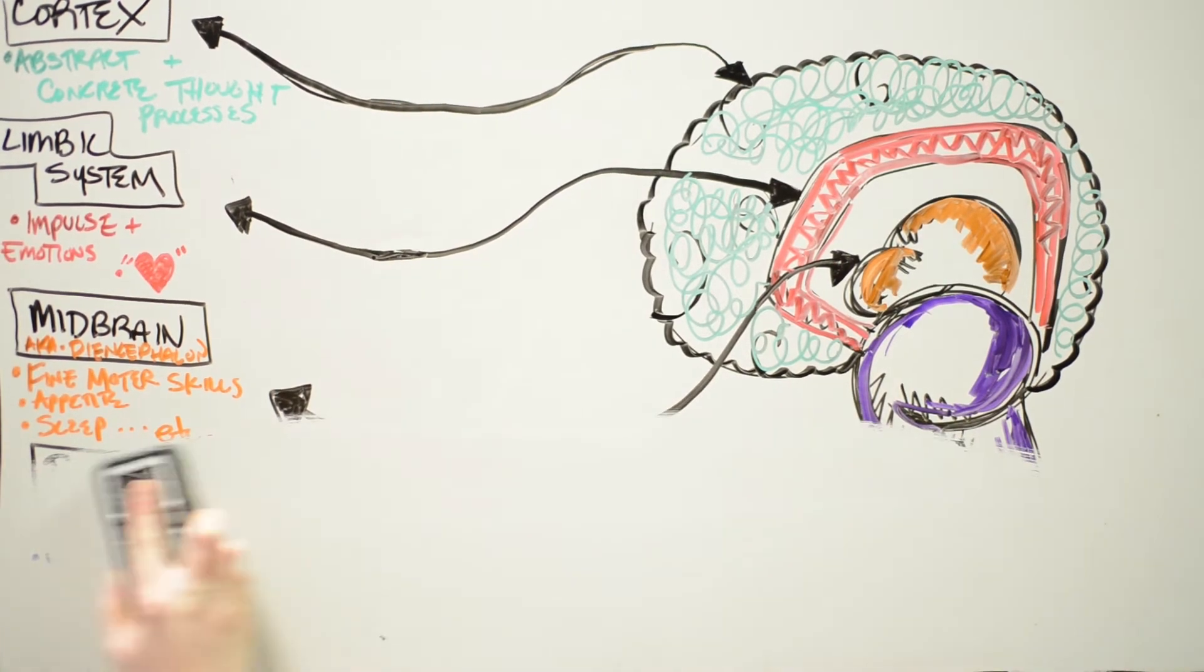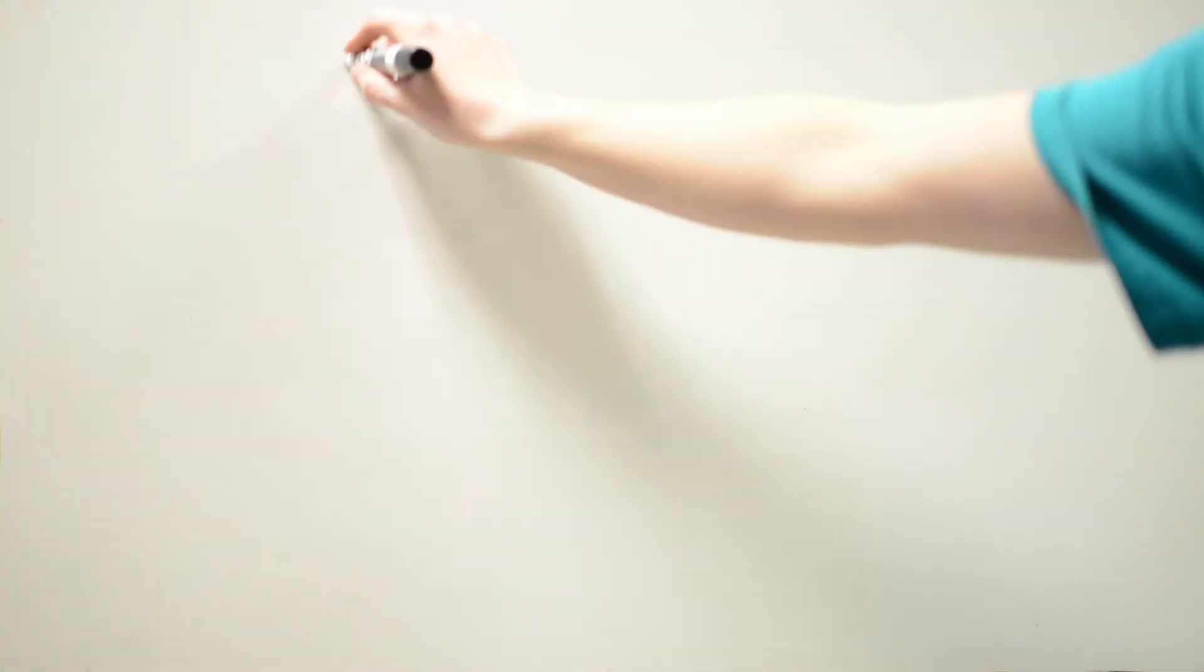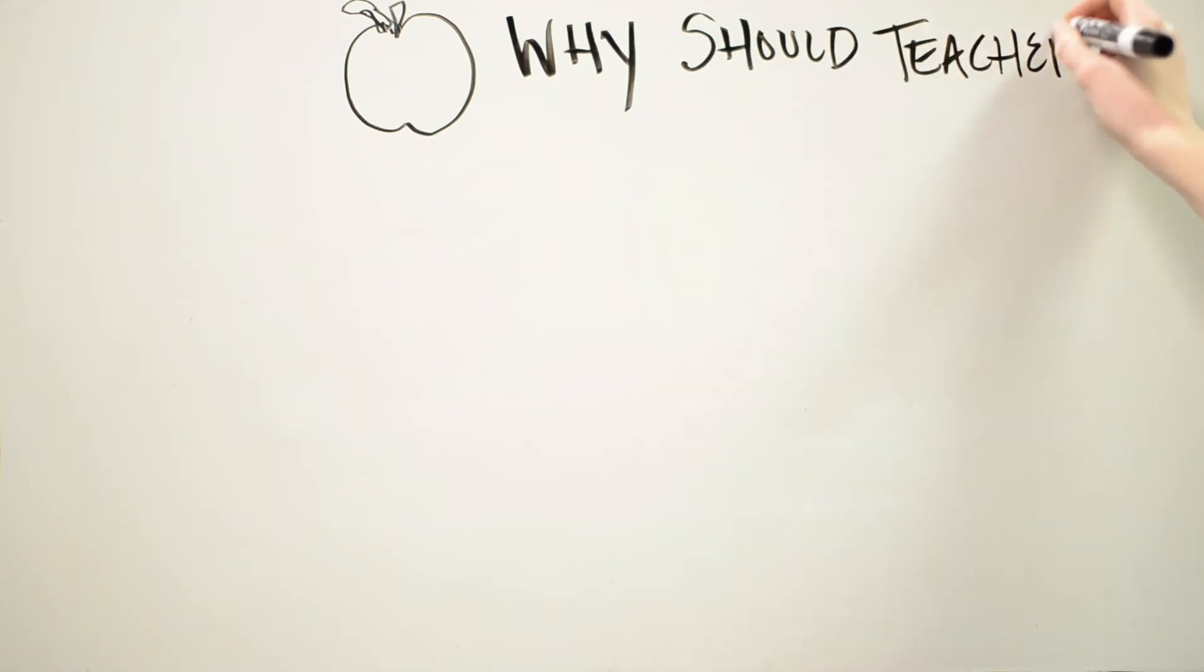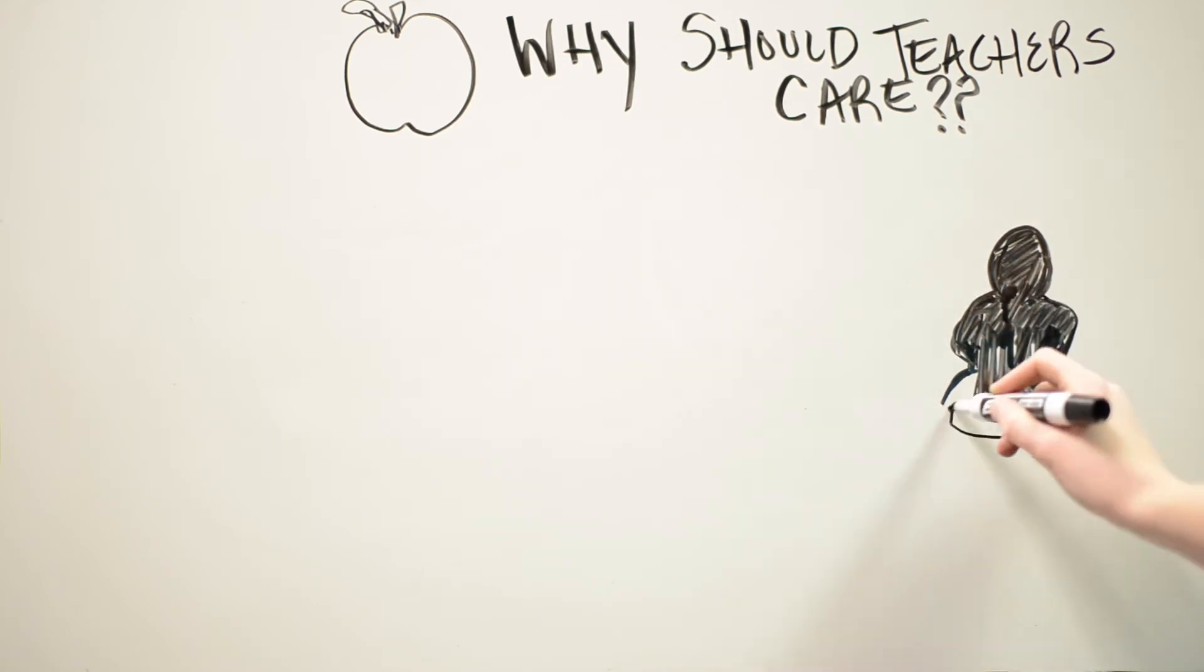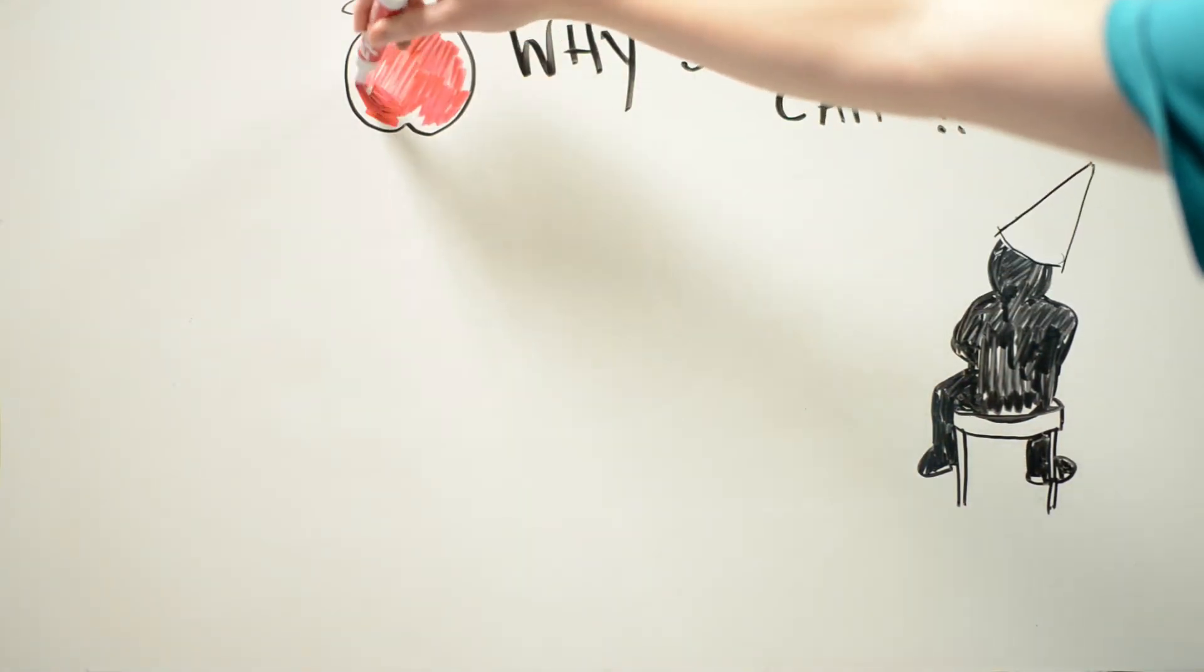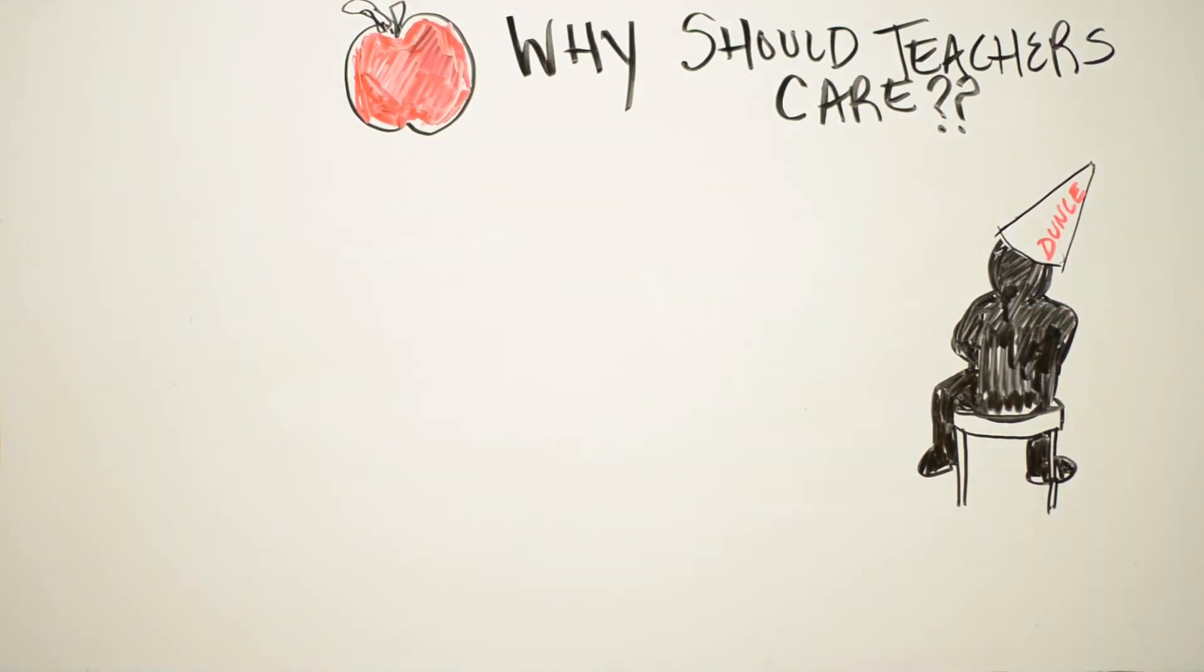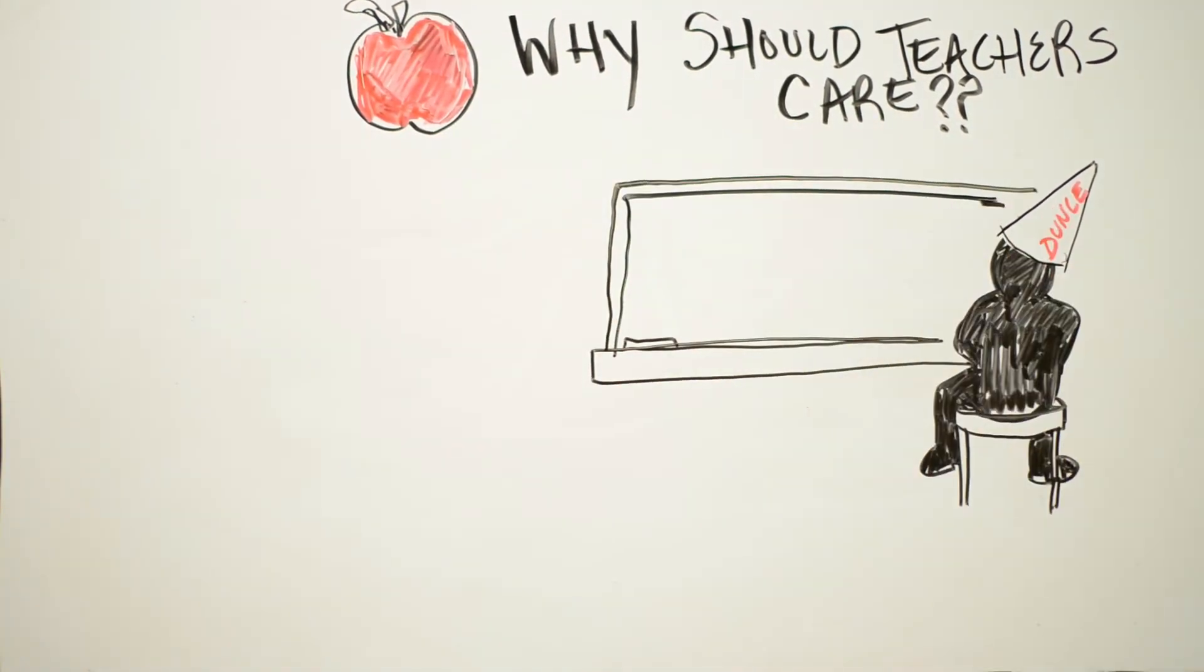If a child has an overstimulated brainstem, the cortex will feel the negative effects. Now that we have a brief overview of each section, why should educators care about brain development? Trauma not only impacts development, but also behavior. Children who experience trauma can become dissociative, hypervigilant, unable to regulate emotions, and will not have the ability to calm and focus enough to learn in the classroom.